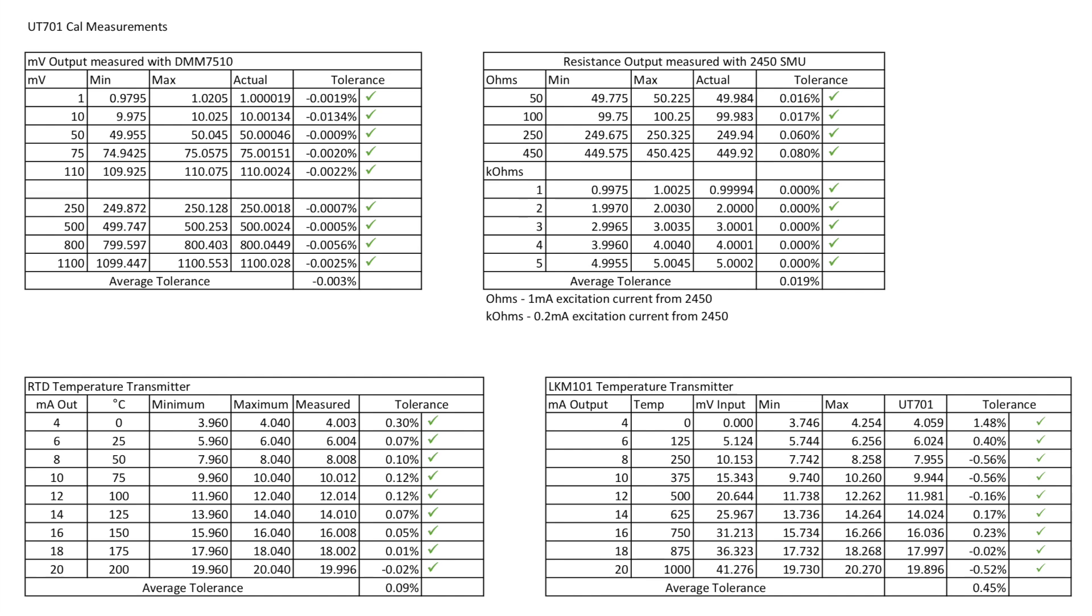On the right hand side, we've got the resistance values measured with the 2450 SMU. It looks like I used slightly different excitation currents than in the video as well, and that will account for some differences. But again, good set of results, especially on the kilo ohms. They are all within spec. So it's worth noting that if the excitation current changes, that can affect the result as well.